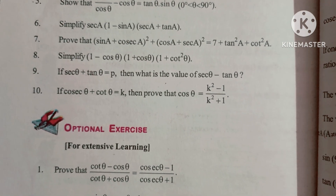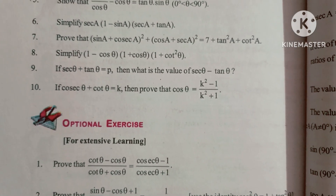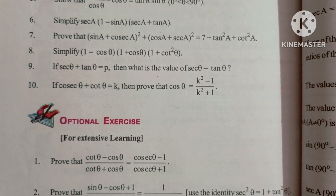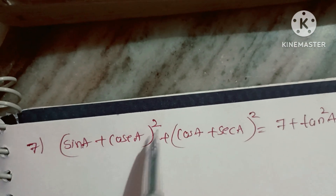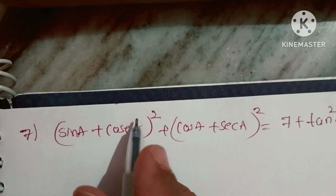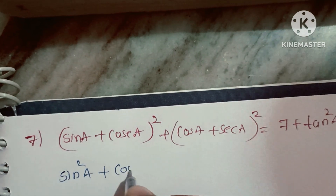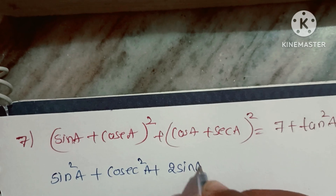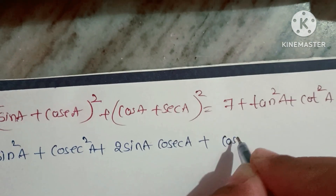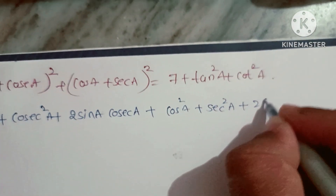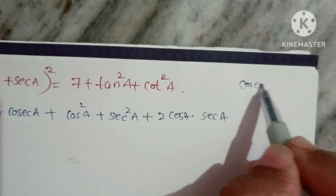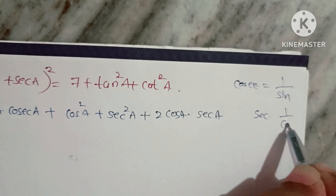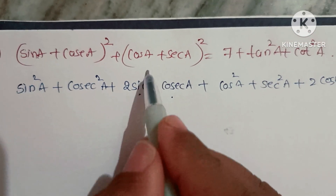Question 7: Show that (sinA + cosecA)² + (cosA + secA)² = 7 + tan²A + cot²A. Expand using (a+b)² formula: sin²A + cosec²A + 2sinA·cosecA + cos²A + sec²A + 2cosA·secA. Since sinA·cosecA = 1 and cosA·secA = 1, the 2×1 + 2×1 = 4.